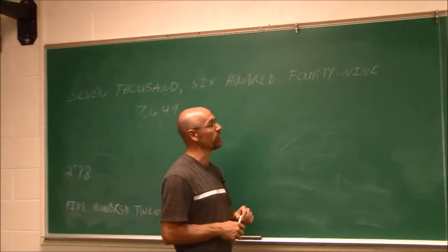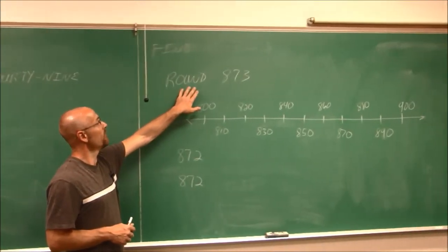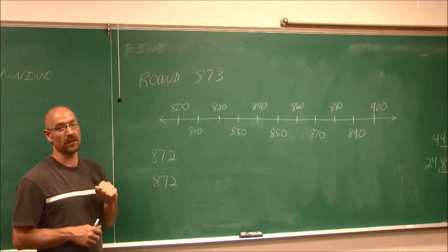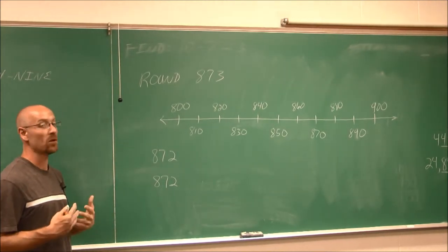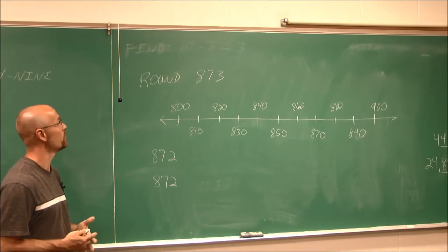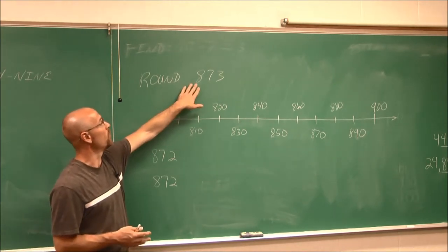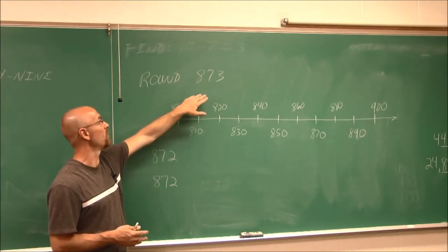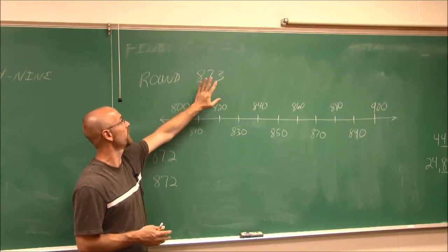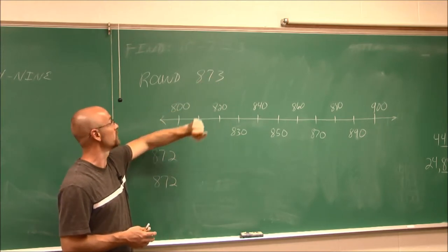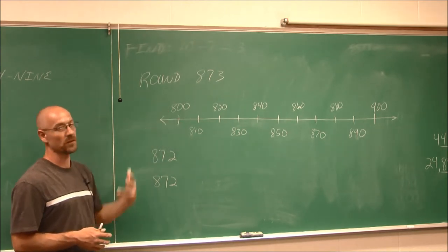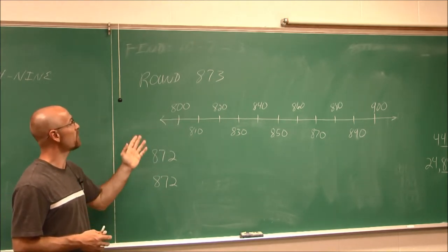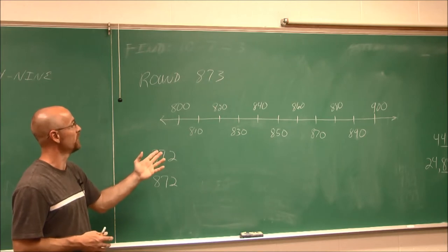All right, let's look at rounding. If I were to ask you to round the number 873, that wouldn't really make sense because I haven't identified what place I want you to round it to. So when we want to round a number, we have to identify what place values. Do I want to round it to the 10s? Do I want to round it to the 100s?